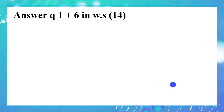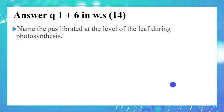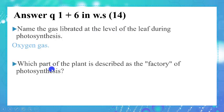Now please answer question 1 and question 6 in worksheet 14. Name the gas liberated at the level of the leaf during photosynthesis — the word liberated means released. The gas released from the leaf during photosynthesis is oxygen gas. Which part of the plant is described as the factory of photosynthesis? The factory is the place where photosynthesis occurs — it happens inside the leaf.